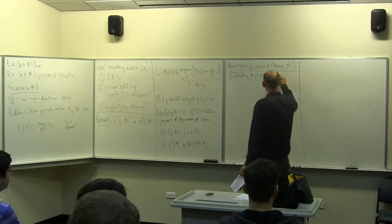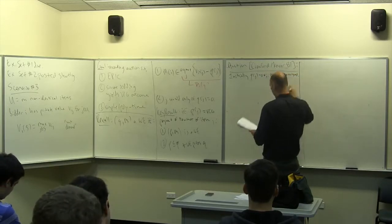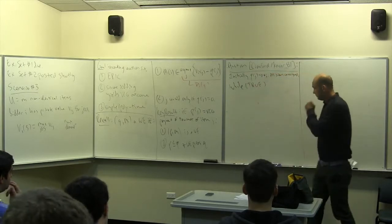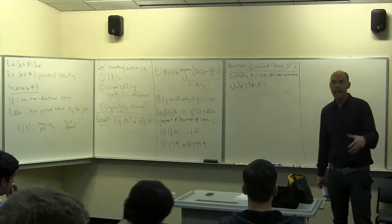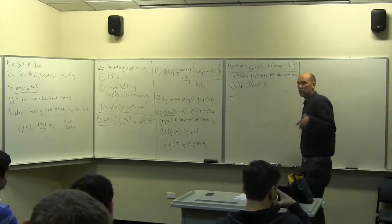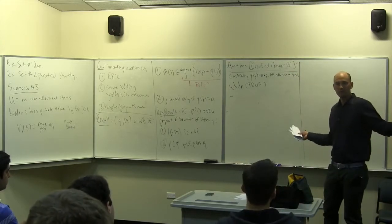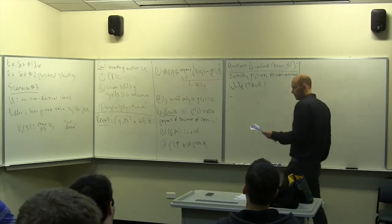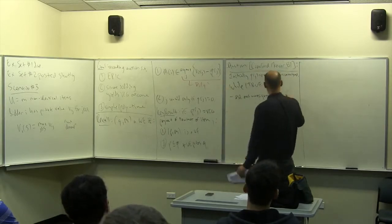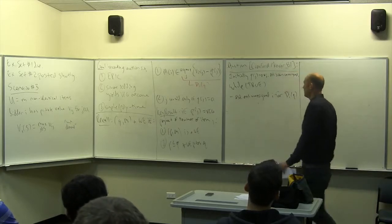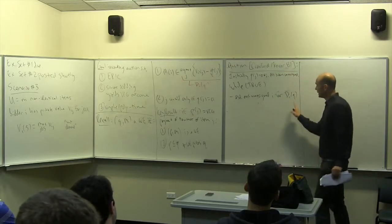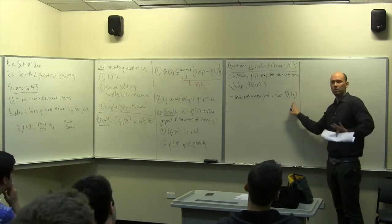Initially all prices are zero. There's a notion of bidders being assigned or unassigned — assigned means there's an item you're tentatively the winner of. All bidders initially are unassigned. This is an iterative auction, not direct revelation. We never directly ask people for their valuations; we just ask: given current prices, what do you want — which is your favorite good? For any currently unassigned bidder, we ask which item they want at the current prices. We collect that information from all unassigned bidders using demand queries D_i(Q). Each bidder can choose an arbitrary favorite good.